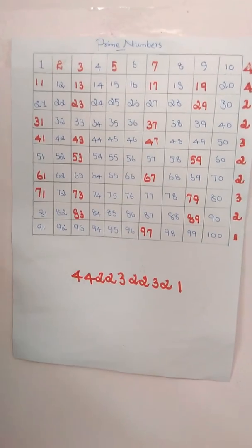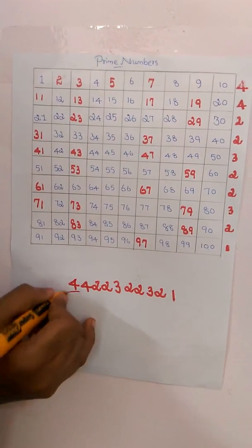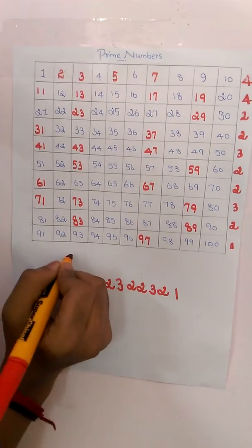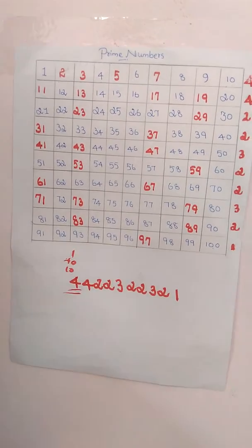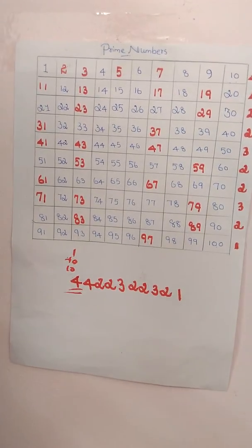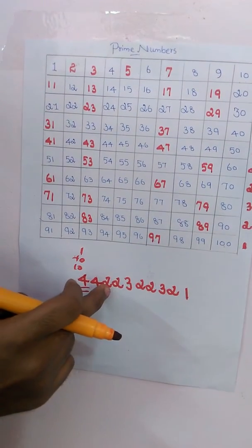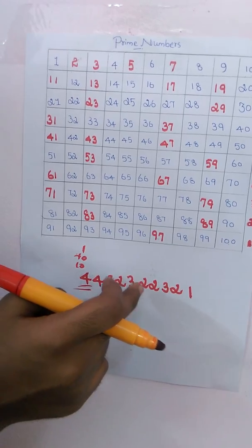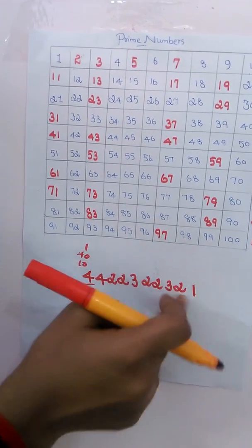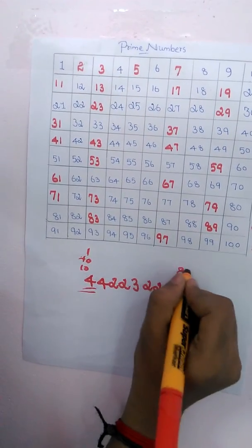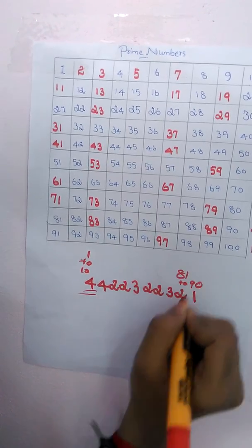Then prime numbers from 1 to 10, four. Then prime numbers from 81 to 90, 1, 2, 3, 4, 5, 6, 7, 8, 9. 81 to 90, how much? Two.